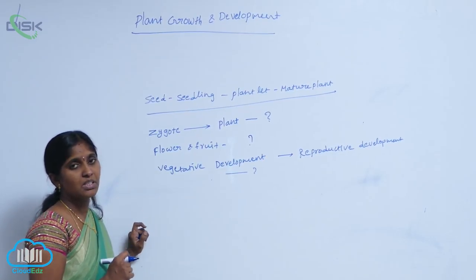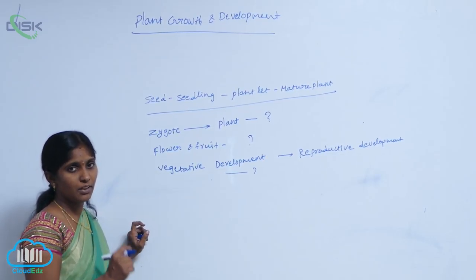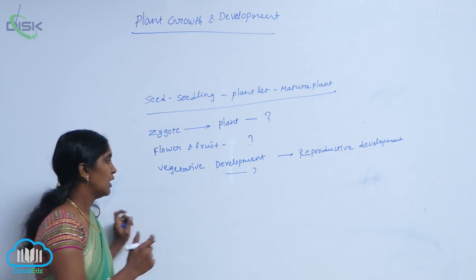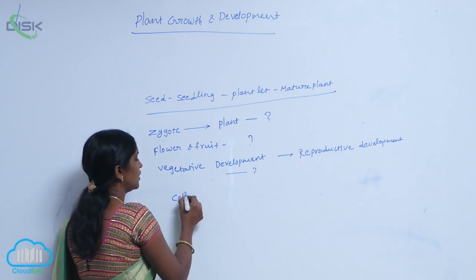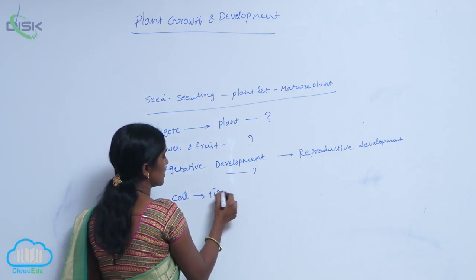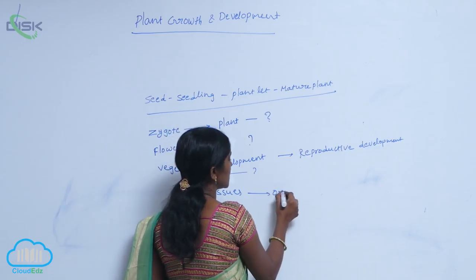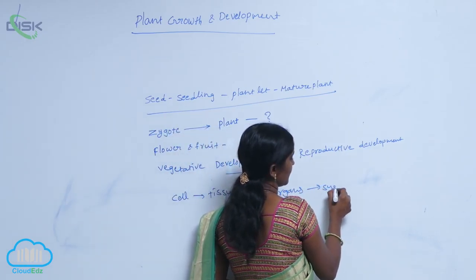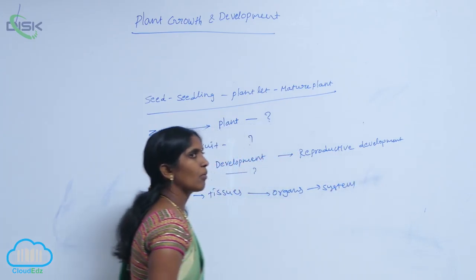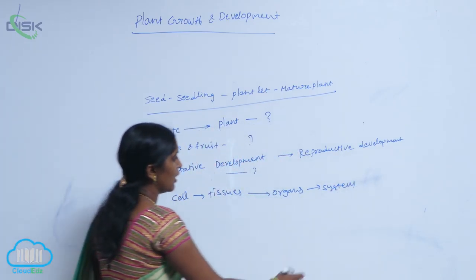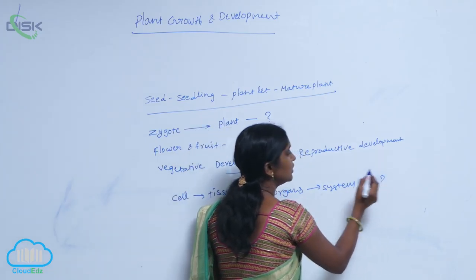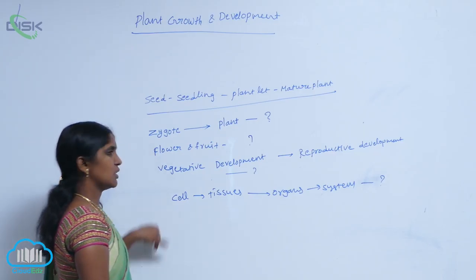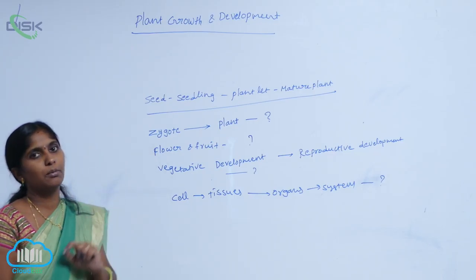How is the cell functionally and structurally variable? How do cells form tissues, tissues form organs, organs form systems? How are they formed? For all these questions, the answer is growth and development.